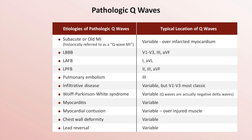The appearance of Q-waves in all of these etiologies — aside from the prior MI — is occasionally referred to as a pseudo-infarct pattern, as these other diseases are frequently mistaken for prior MIs. In my experience, this mistake is most often made with infiltrative diseases, since most of the other etiologies listed will often have additional EKG findings suggesting the correct diagnosis.